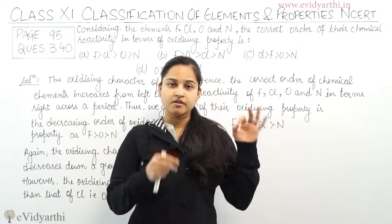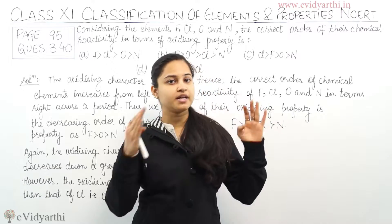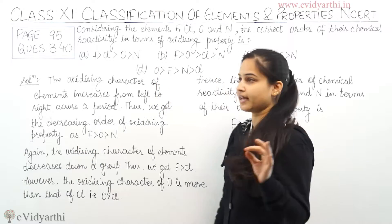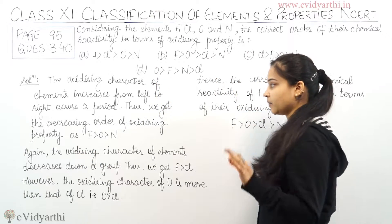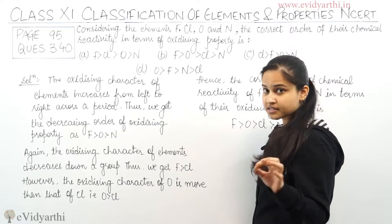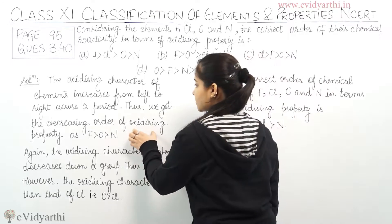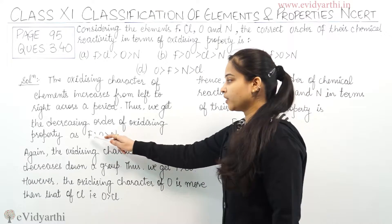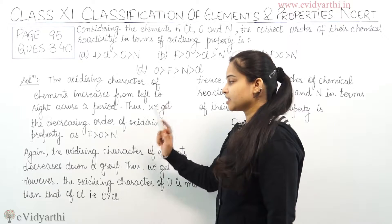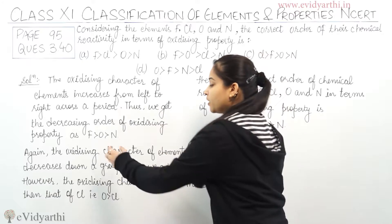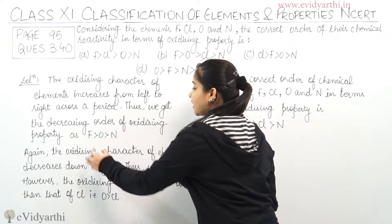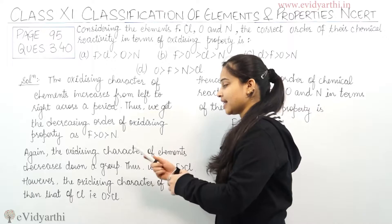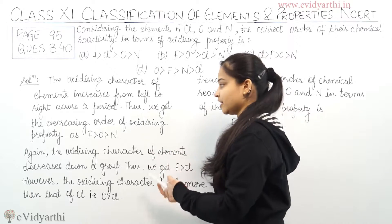So when we are moving from left to right in a period, the oxidizing character increases, and thus we get the decreasing order of oxidizing property as fluorine, oxygen, and nitrogen. This means fluorine has the highest oxidizing character, then oxygen, and then nitrogen.